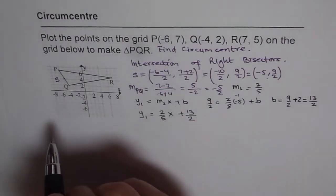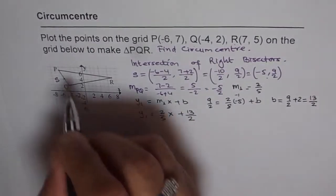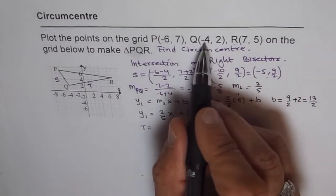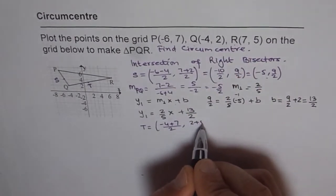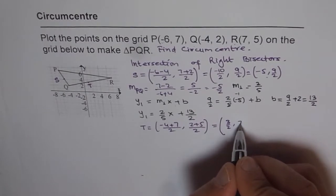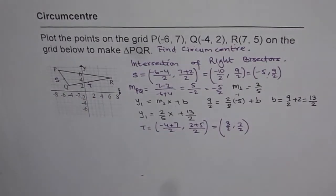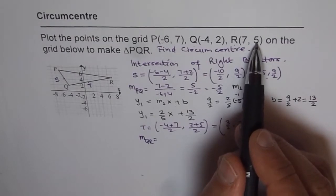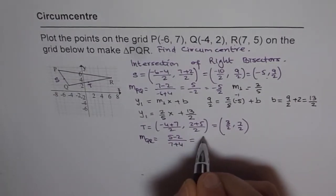Now let's find the right bisector of QR. The midpoint T of QR has x-coordinate (-4 + 7) / 2 = 3/2 and y-coordinate (2 + 5) / 2 = 7/2. So T = (3/2, 7/2). The slope of QR is (5 - 2) / (7 - (-4)) = 3/11.